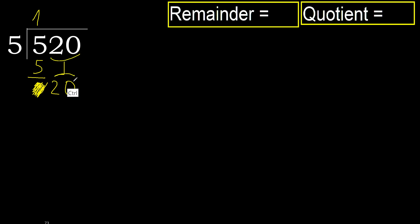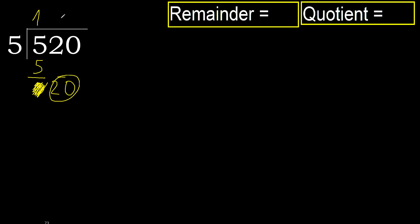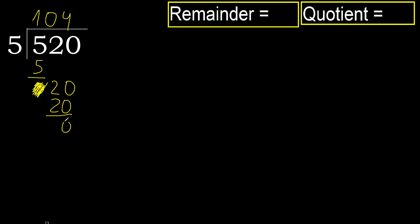Here we have 2 numbers, so we complete with 0. Always complete with 0 because there are 2 numbers here. 20: 5 multiplied by 4 is 20. 5 multiplied by 4 is 20, which is not greater. 20 minus 20 equals 0.